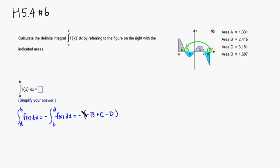I'm going to distribute this negative sign to each term, so you can see that this is going to be simply B minus C plus D.